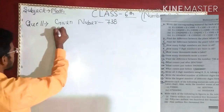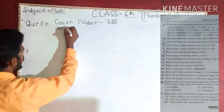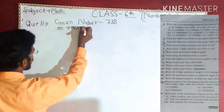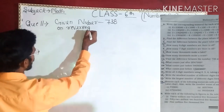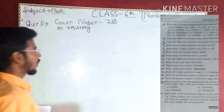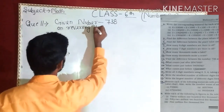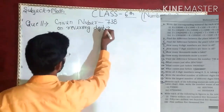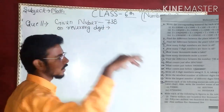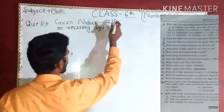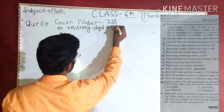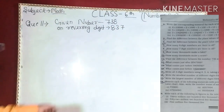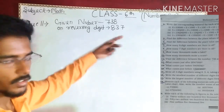On reversing the digits — reversing means to reverse — so 738 reversed gives us 837. Given number is 738, reversing digit gives 837.